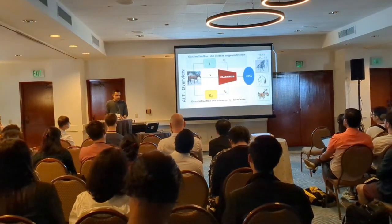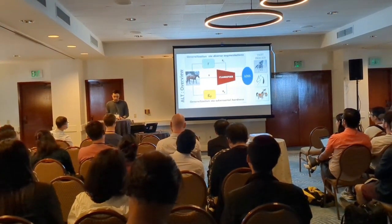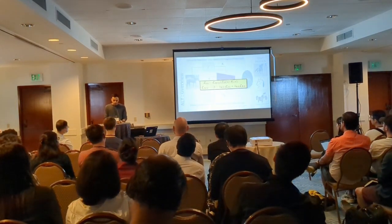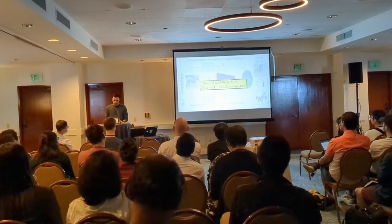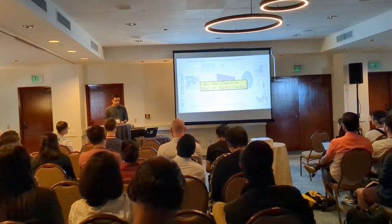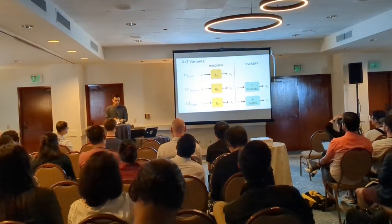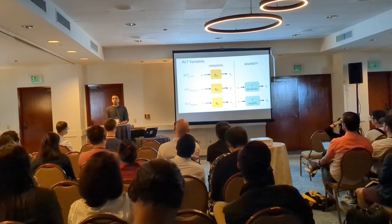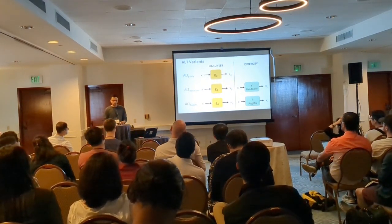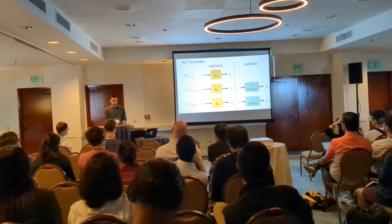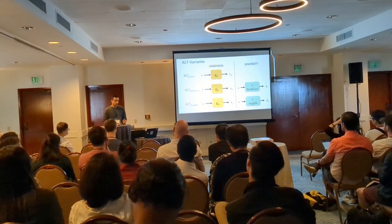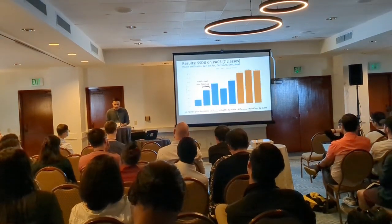That leads us to this overview of our approach, showing the different modules of ALT and the loss function, which combines the standard classifier loss with our new consistency constraint. We get three variants of ALT: the first uses the hardness component only — ALT G only — and the second and third use ALT combined with existing augmentation techniques, like AugMix and RankConf.